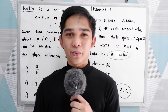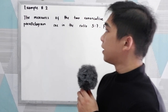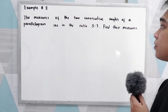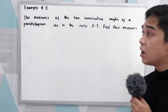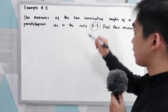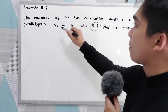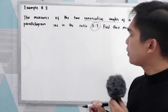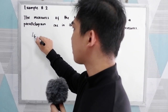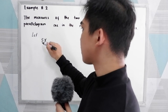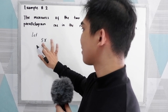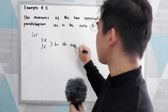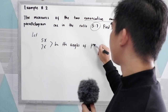Let's have example number two. The measures of the two consecutive angles of a parallelogram are in the ratio of 5 is to 7. Find their measures. We have the given ratio of 5 is to 7 as the measure of the consecutive angles. So let 5x and 7x be the angles of the parallelogram.